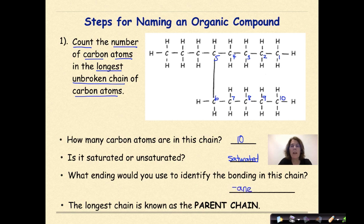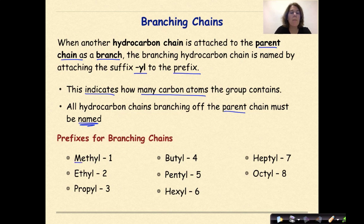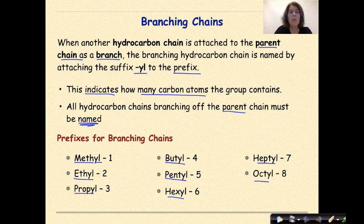The longest chain is known as the parent chain. When another hydrocarbon chain is attached to the parent chain as a branch, the branching hydrocarbon chain is named by attaching the suffix -yl to the prefix, indicating how many carbon atoms the group contains. All hydrocarbon chains branching off the parent chain must be named — that's very important. If there's one carbon branching off, we call it methyl. Two carbons is ethyl. Three carbons is propyl. You could have butyl, pentyl, hexyl, heptyl, or octyl, but for this course we'll focus on branches of one to three carbons maximum.